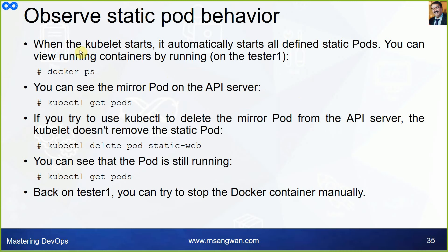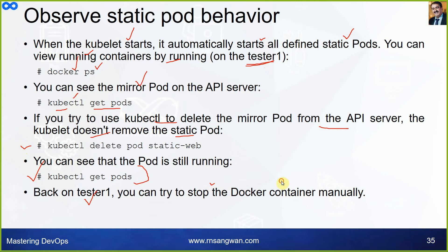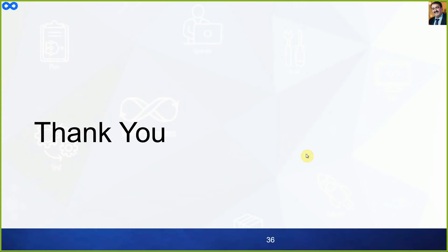To observe static pod behavior: when kubelet starts, it automatically starts all defined static pods. You can view the running containers using docker ps or podman ps on the tester1 machine. You can also see the mirror pod on the API server by running kubectl commands. If you try to delete the mirror pod using kubectl, the kubelet does not remove the static pod — it comes back and is still visible. You can also try to stop the Docker container manually on tester1.